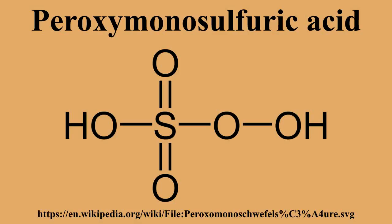H2SO5 is sometimes confused with hydrogen persulfate, known as peroxy-disulfuric acid. The disulfuric acid, which appears to be more widely used as its alkali metal salts, has the structure HO-OS2OH.